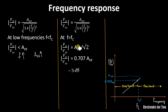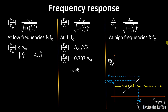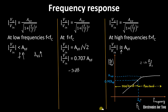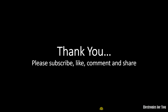Further, as frequency continues to increase, the ratio FC/F becomes very small and can be neglected, so the denominator approaches 1. Therefore the filter's gain becomes nearly equal to AVF — the pass-band gain. At maximum frequency, the gain stabilizes at AVF = 1 + RF/R1, which is the pass-band gain. This is the frequency response for the high-pass filter.